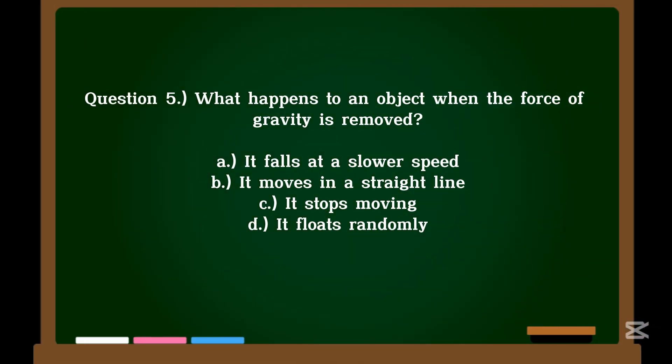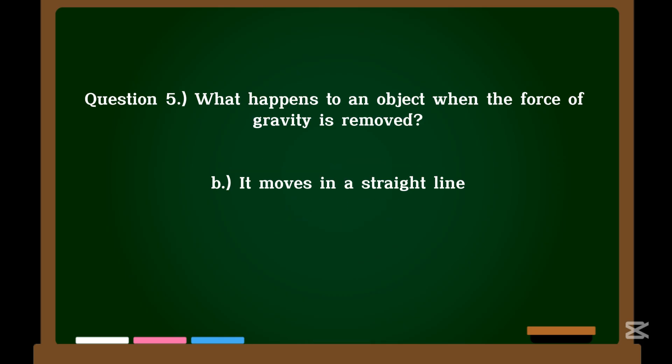Question 5. What happens to an object when the force of gravity is removed? A. It falls at a slower speed. B. It moves in a straight line. C. It stops moving. D. It floats randomly. Correct answer: B. It moves in a straight line.